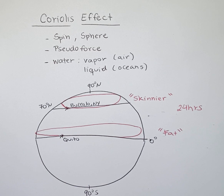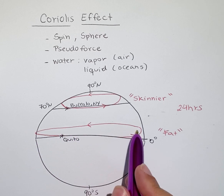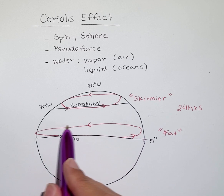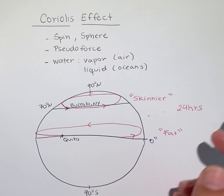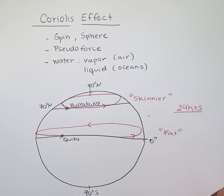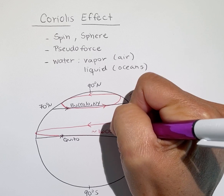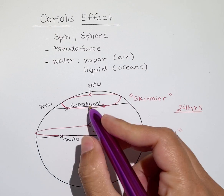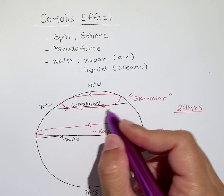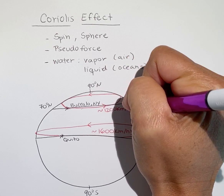Because of their different circumferences, these two cities have different eastward velocities. Quito moves at a longer circumference and must complete one rotation in 24 hours, so Quito moves at a faster speed — about 1,600 kilometers per hour. In Buffalo, New York, the speed is slower because the circumference is smaller — about 1,200 kilometers per hour.